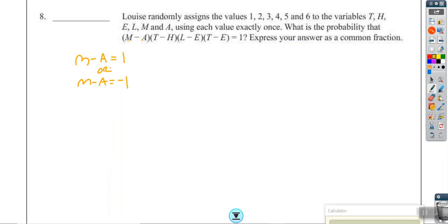So we also know that t and h have to be sequential, l and e have to be sequential, but then we notice we have the t and the e again, and they have to be sequential. And we know that each number has to be used once. So that also tells us that e and t cannot equal using each value exactly once.